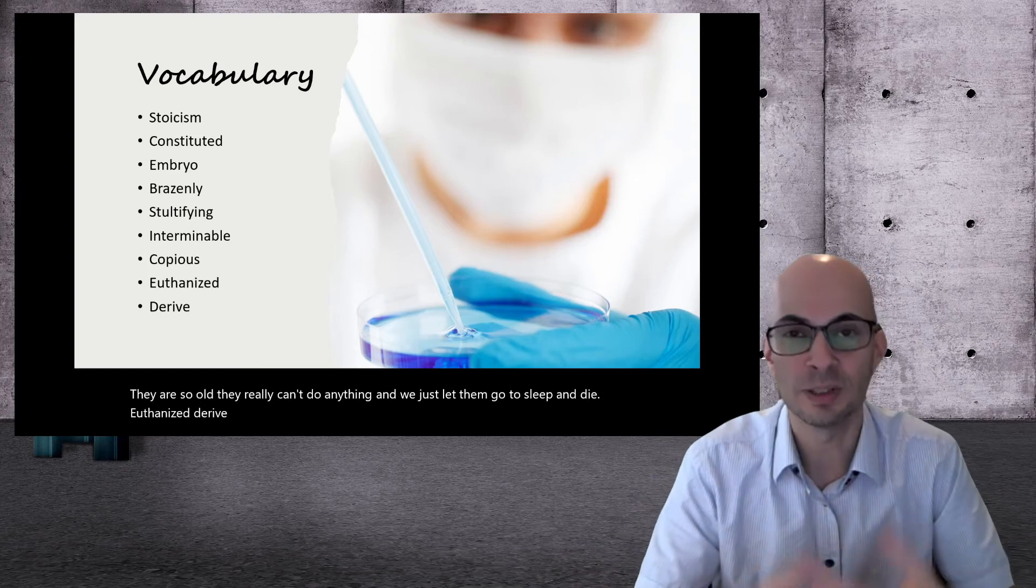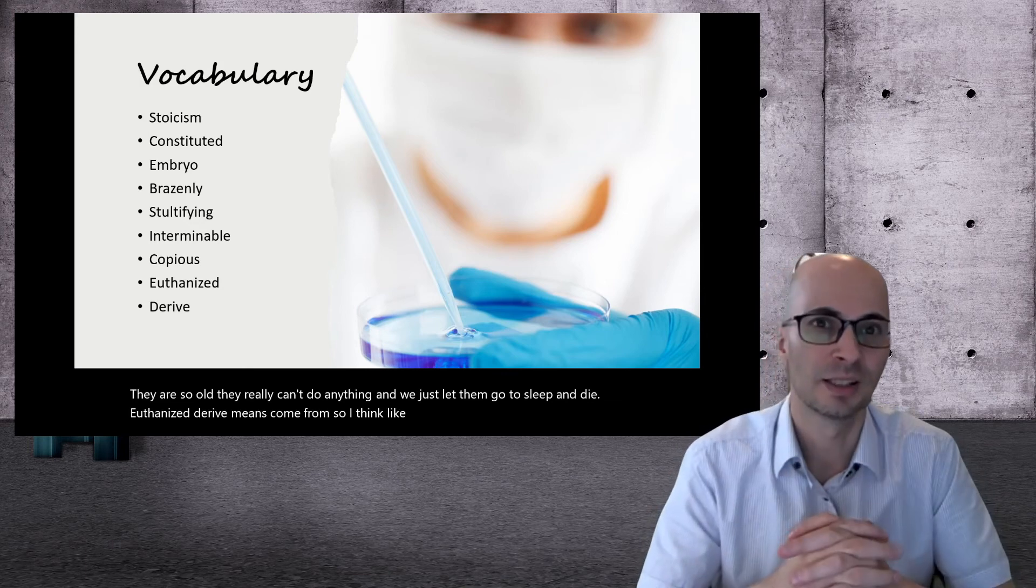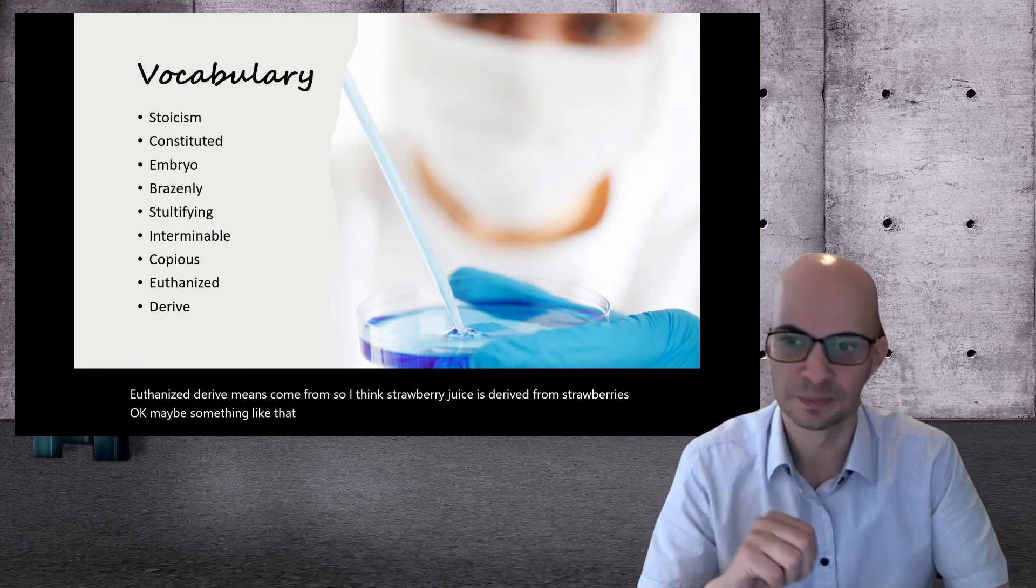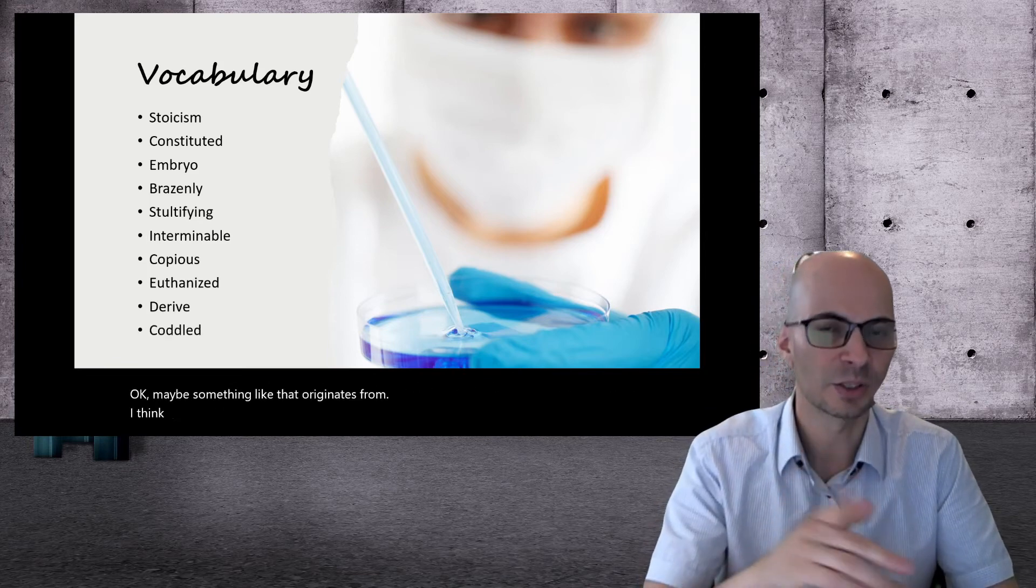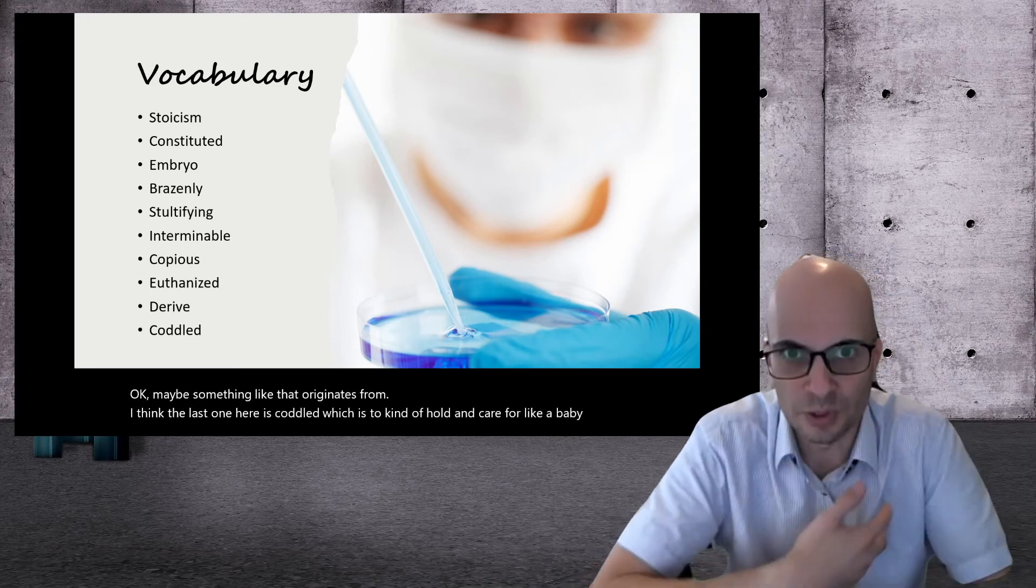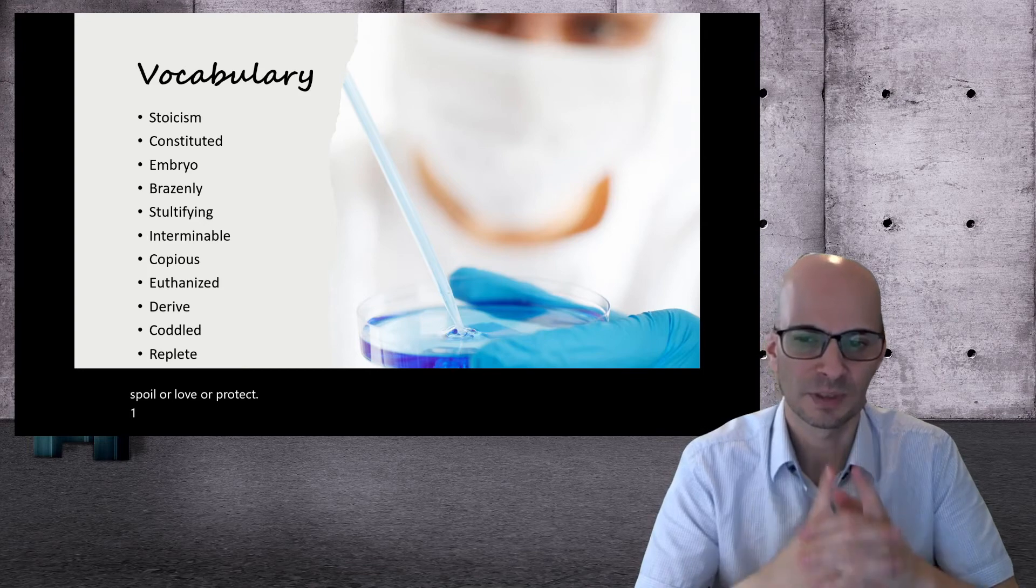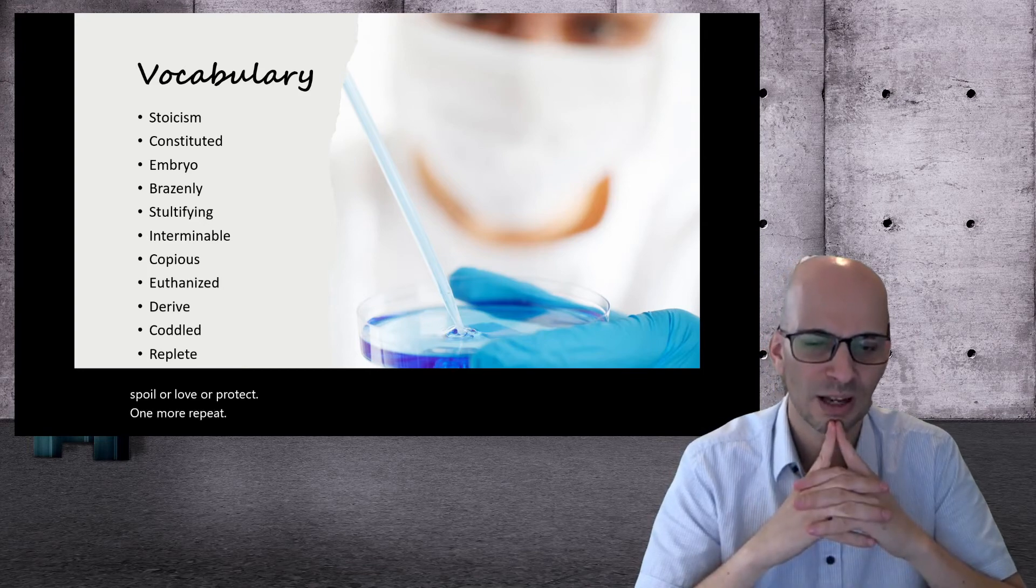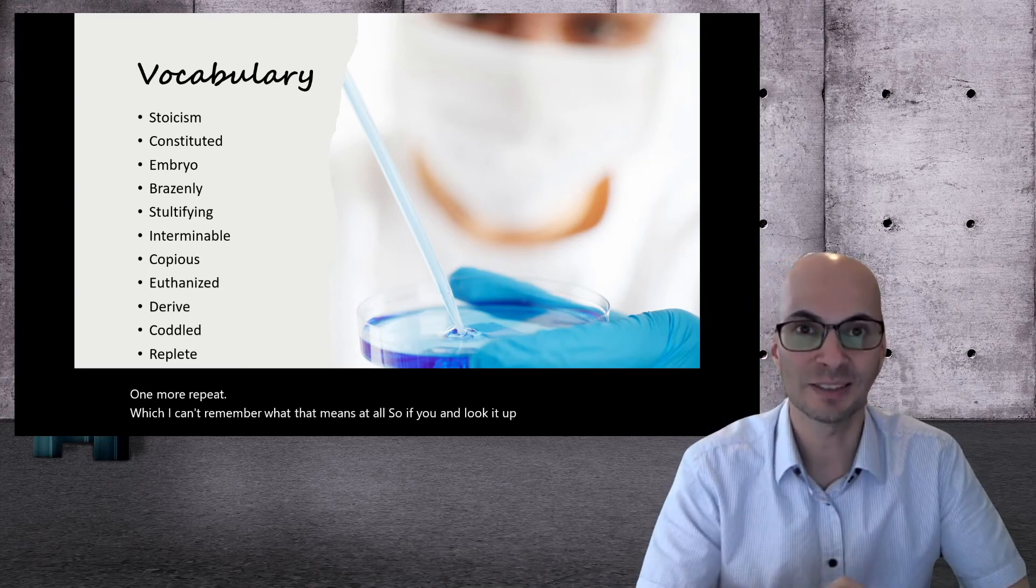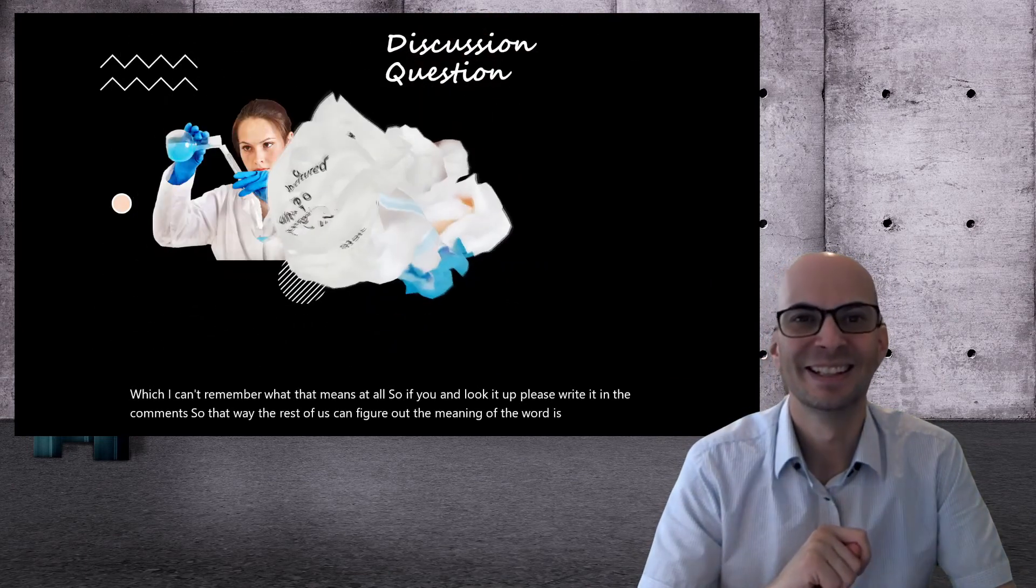Derive means come from, so I think like strawberry juice is derived from strawberries. Okay. Maybe something like that. Originates from. I think the last one here is coddled, which is to kind of hold and care for like a baby to kind of spoil or love or protect. Oh, one more, replete, which I can't remember what that means at all. So if you know, and look it up, please write it in the comments. So that way the rest of us can figure out what the meaning of the word is also. Let's go to discussion question.